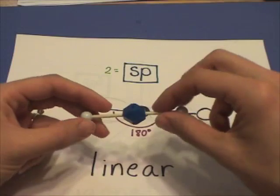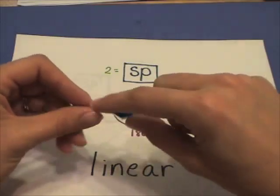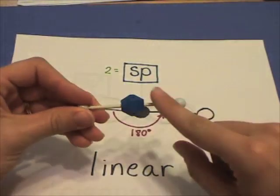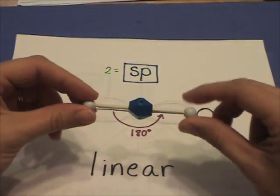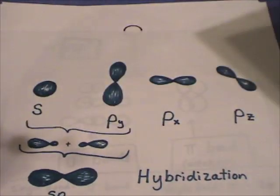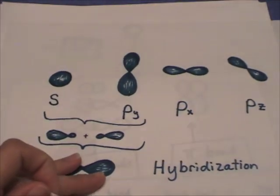There are two sp hybridized orbitals getting as far away as possible — linear. What do I mean by sp?